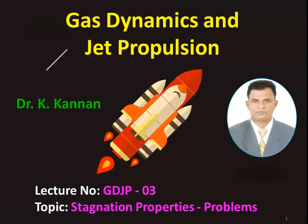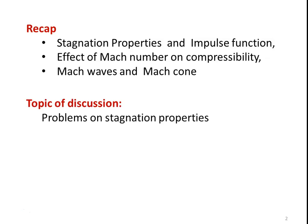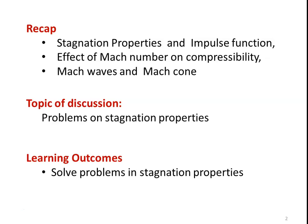This is lecture number three on problems on stagnation properties. In the previous lecture, we discussed the stagnation properties and the impulse function. We derived the equations and we discussed the effect of Mach number on the compressibility. We also discussed the Mach waves and the Mach cones. Today we solve a few problems on the stagnation properties. The learning outcome for this lecture: at the end of the lecture, the students will be able to solve problems on stagnation properties on their own.